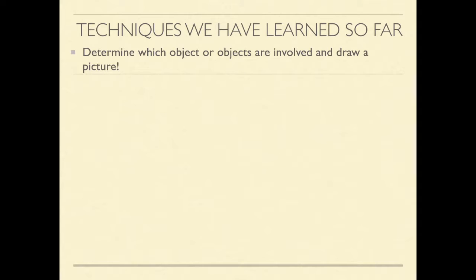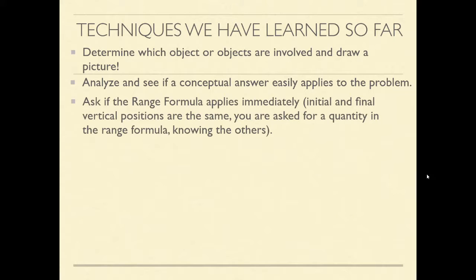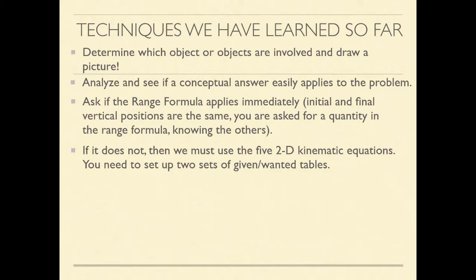Let's review the techniques we've learned so far. First, determine which object or objects are involved and draw a picture if one isn't provided. Sometimes after drawing the picture an easy conceptual answer exists and you don't have to do any math. If not, ask whether the range formula is needed — it applies only when the initial and final vertical positions are the same and you're asked for a quantity in the range formula. If the range formula doesn't apply, use one of the five 2D kinematic equations — two horizontal and three vertical — and set up your given and wanted tables for each component.